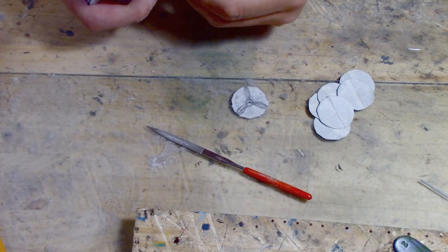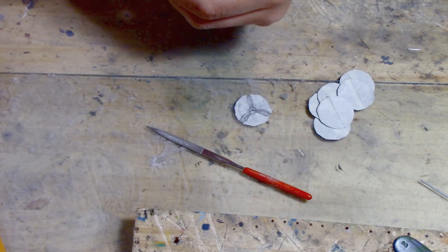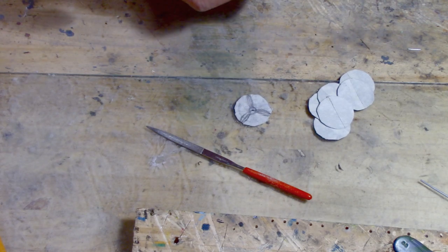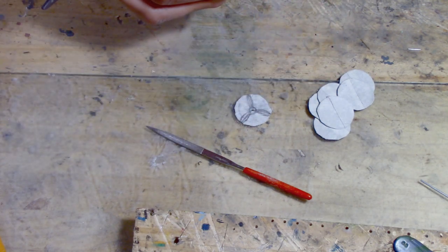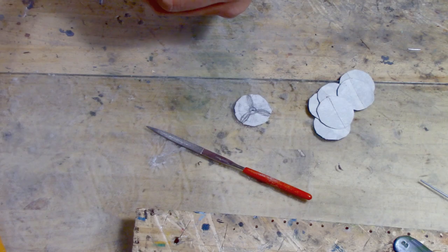So I just taped up the discs I cut out. I'm just cutting around now and making the paper circular so I can work on them all.